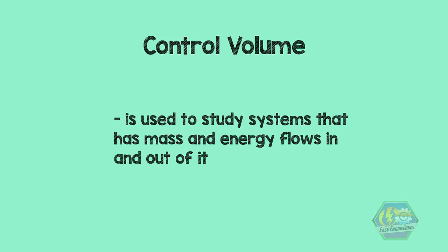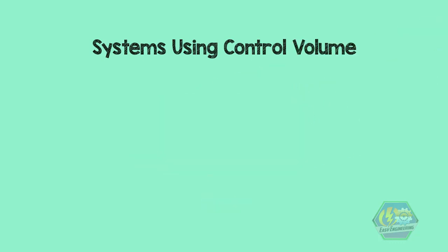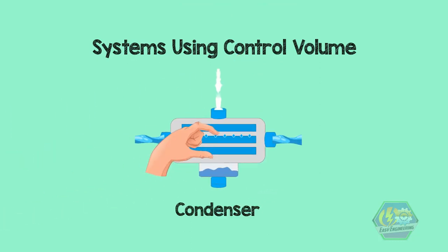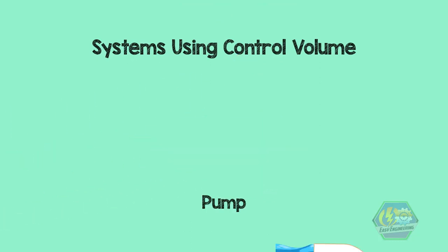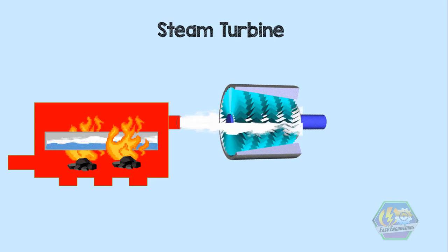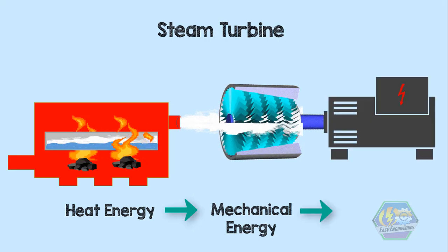Control volume is used to study systems that exhibit going in and out of mass and energy. Here are some systems we can study using control volume: boiler, turbine, condenser, or pump. Let's take the turbine for example. Imagine this is a steam turbine — it receives steam from a boiler with its mass and heat energy, which will be converted into mechanical energy and transferred to a generator to become electrical energy.